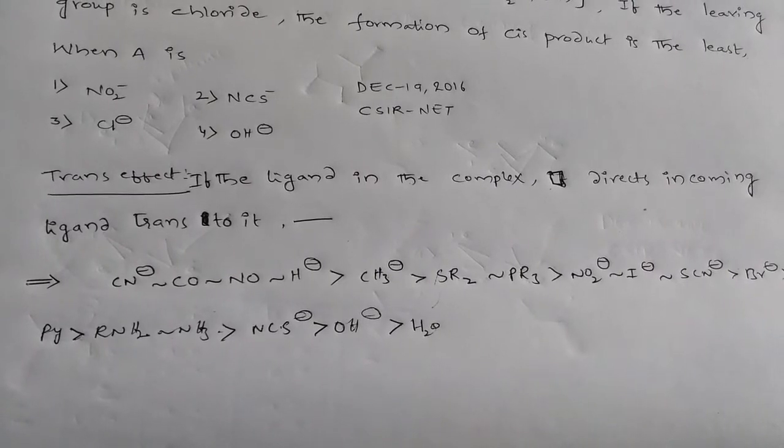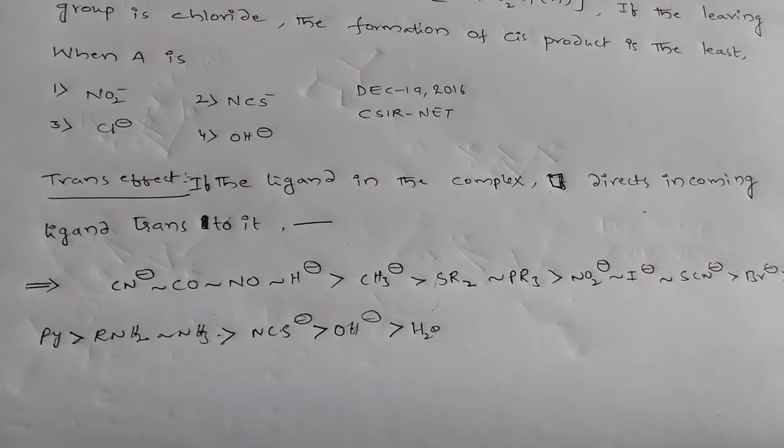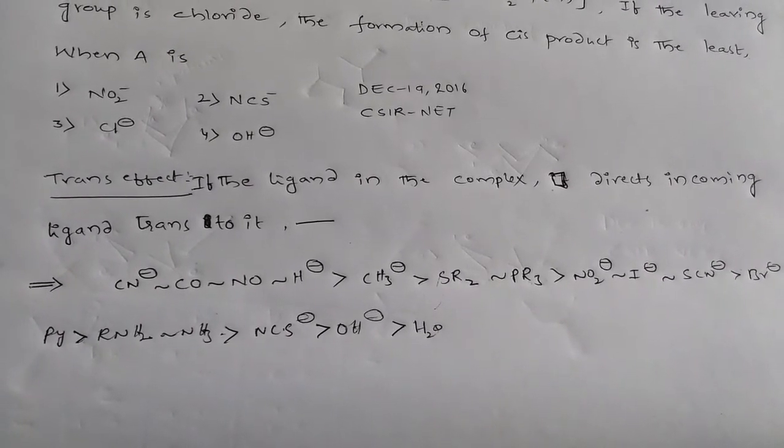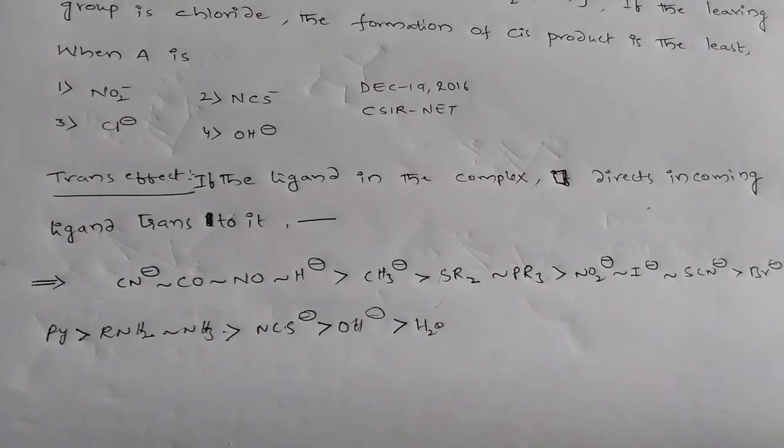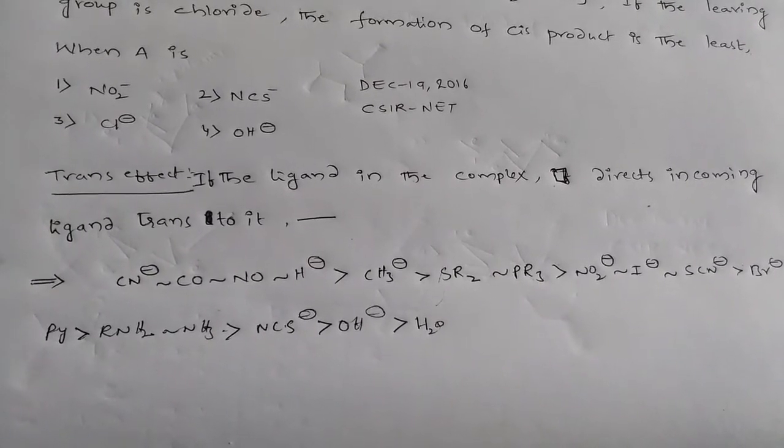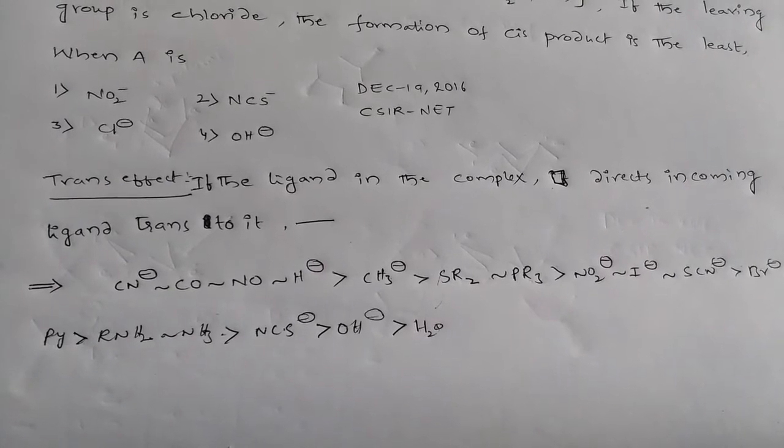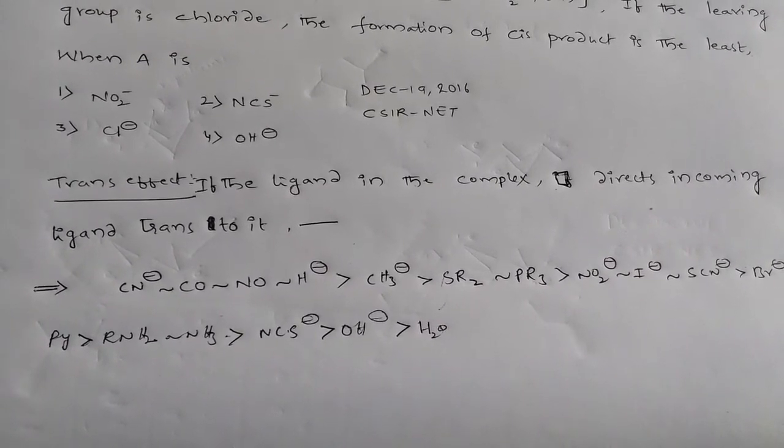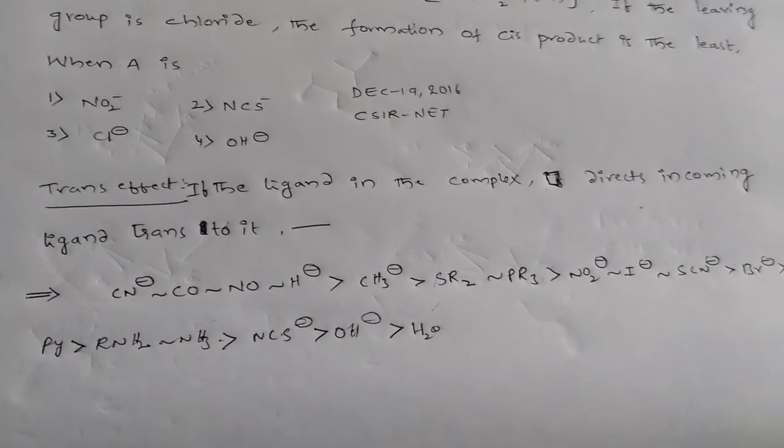In this series, the left and right side, that means CN-, CO, NO, these have strong trans-effect ability, and when we compare with the least ones, OH-, H2O-, NCS-.